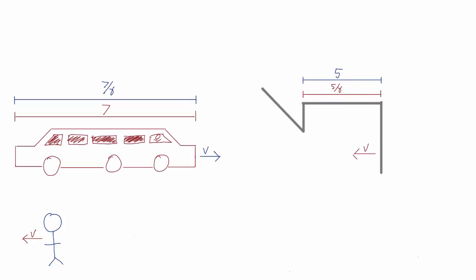But what about from Alice's reference frame? Now, as before, Alice sees the garage flying towards her at speed V, and the garage is length-contracted, so it's too short for the limo to fit in.